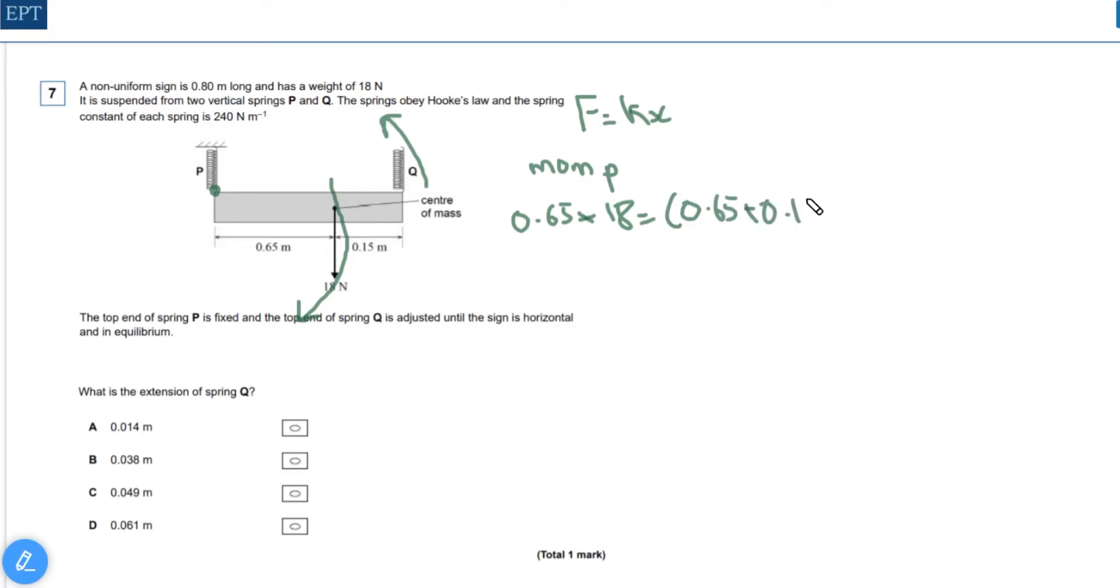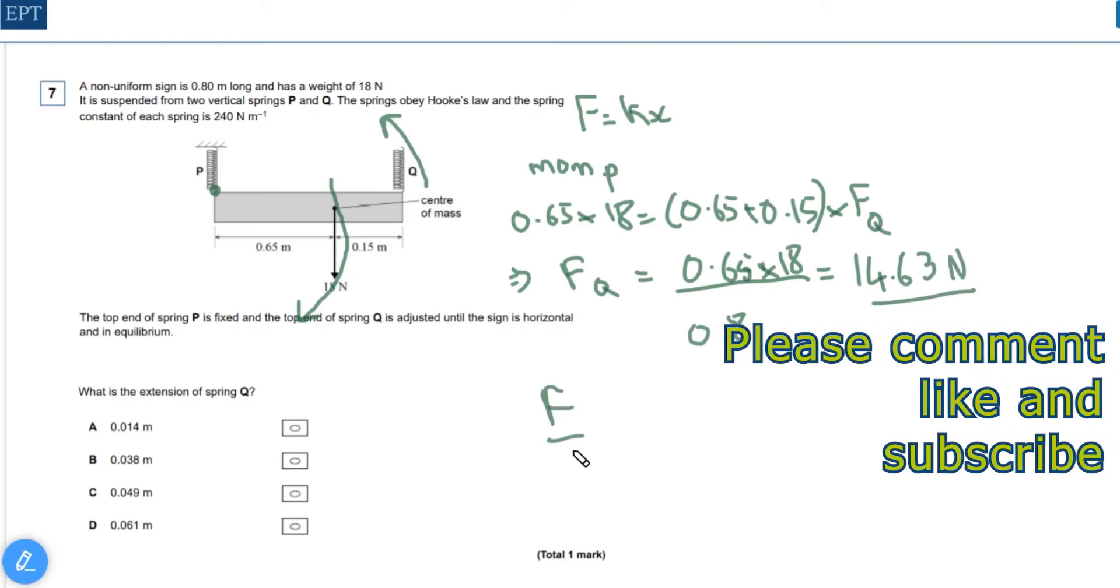This means that fq is equal to 0.65 times 18 all divided by 0.8, which if you put that into your calculator gives you the answer being 14.63 newtons.